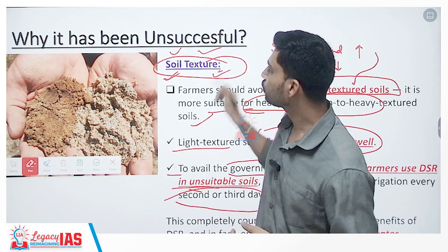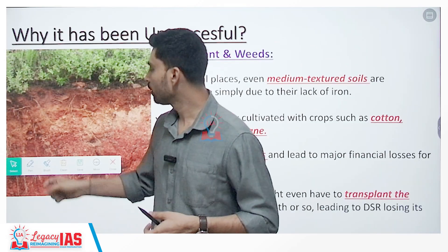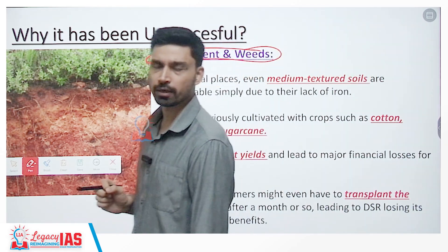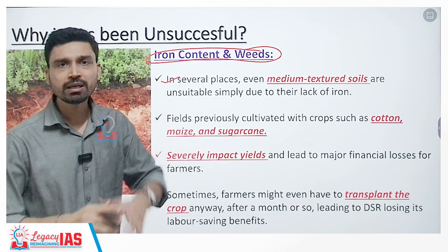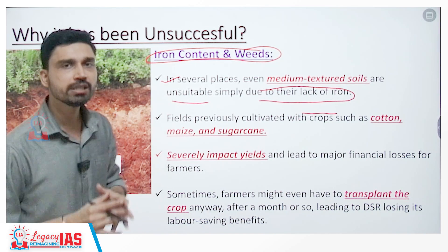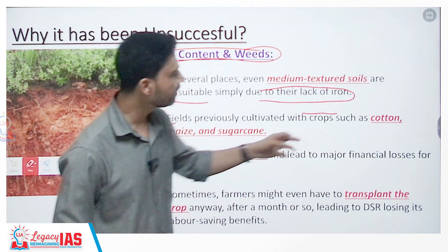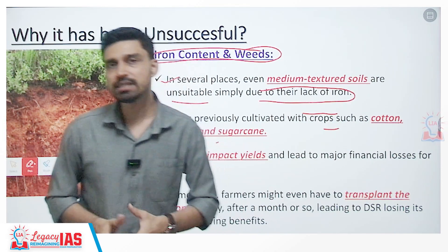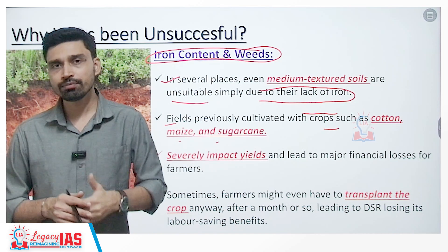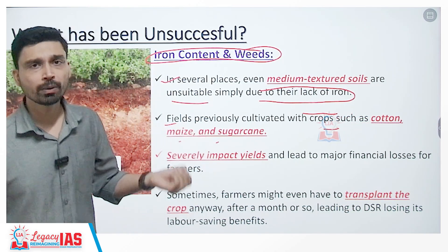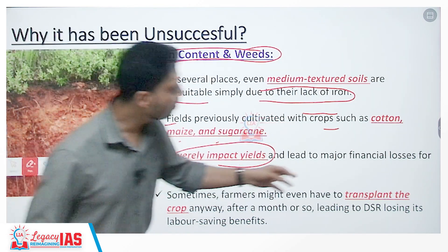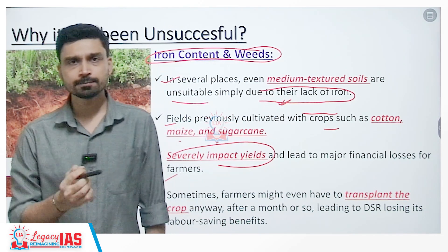The second culprit is the iron content as well as the presence of weeds in the soil. Scientists have found that in several places, even if soil texture is good, fields are unsuitable because they lack the required amount of iron needed for DSR. Fields previously cultivated with crops such as cotton, maize, and sugarcane generally have lesser iron content. If farmers immediately try to use DSR for paddy cultivation after harvesting those crops, they will not get the desired yield, leading to major financial losses.